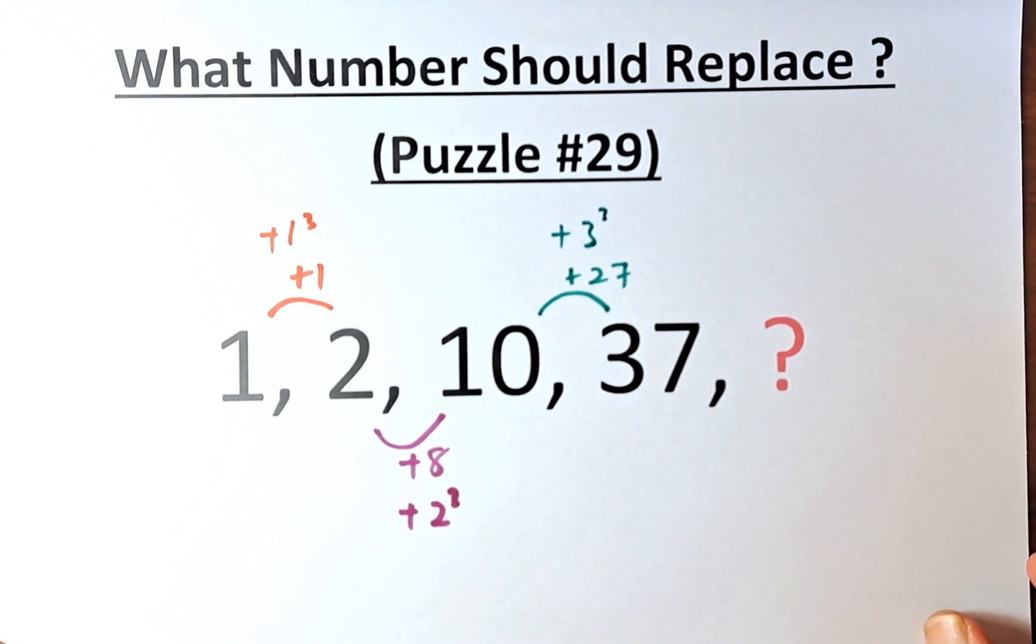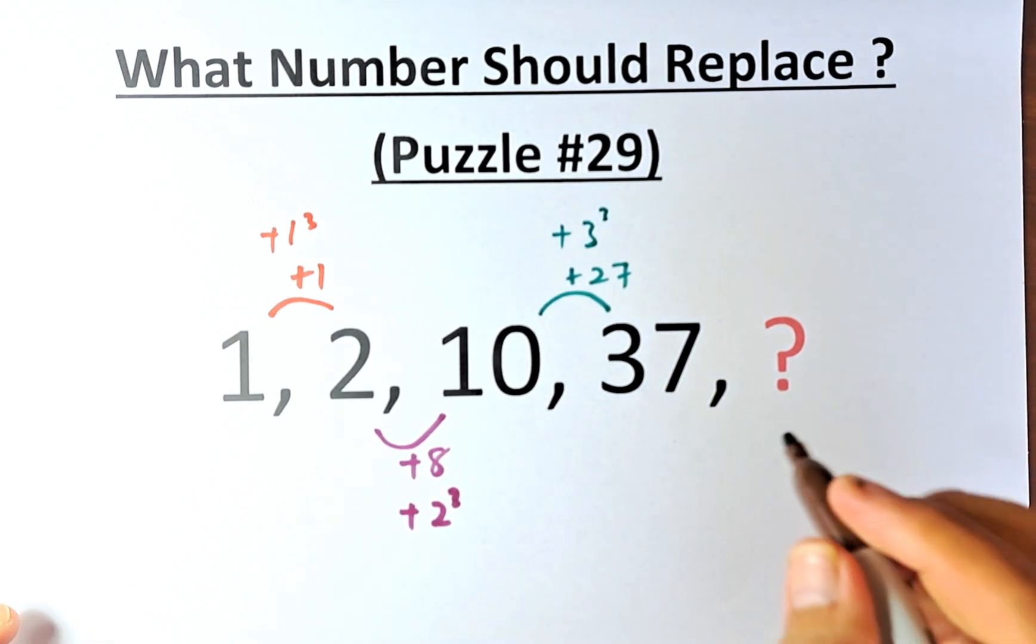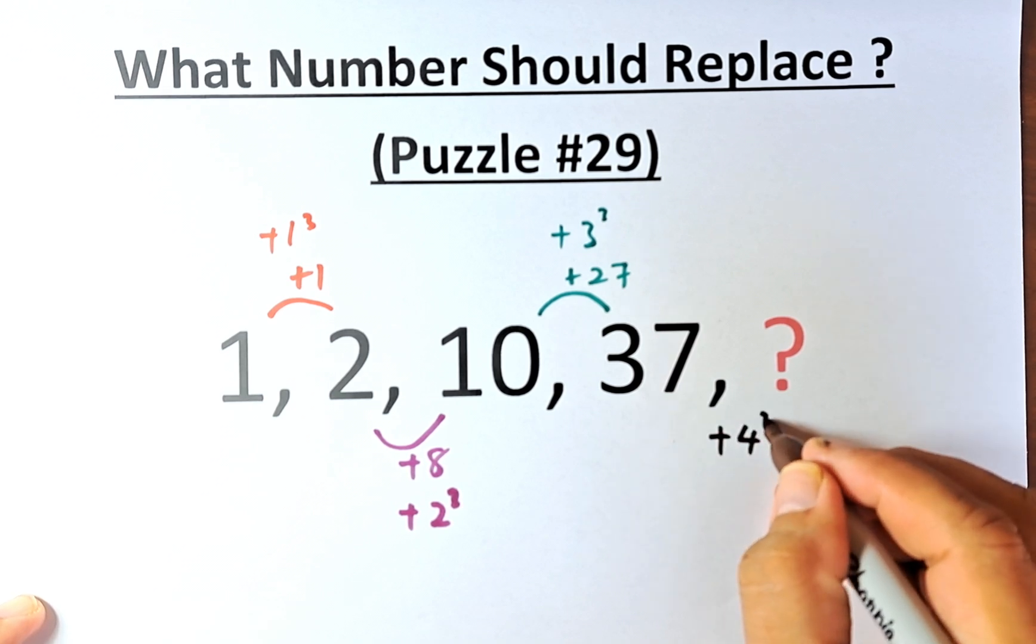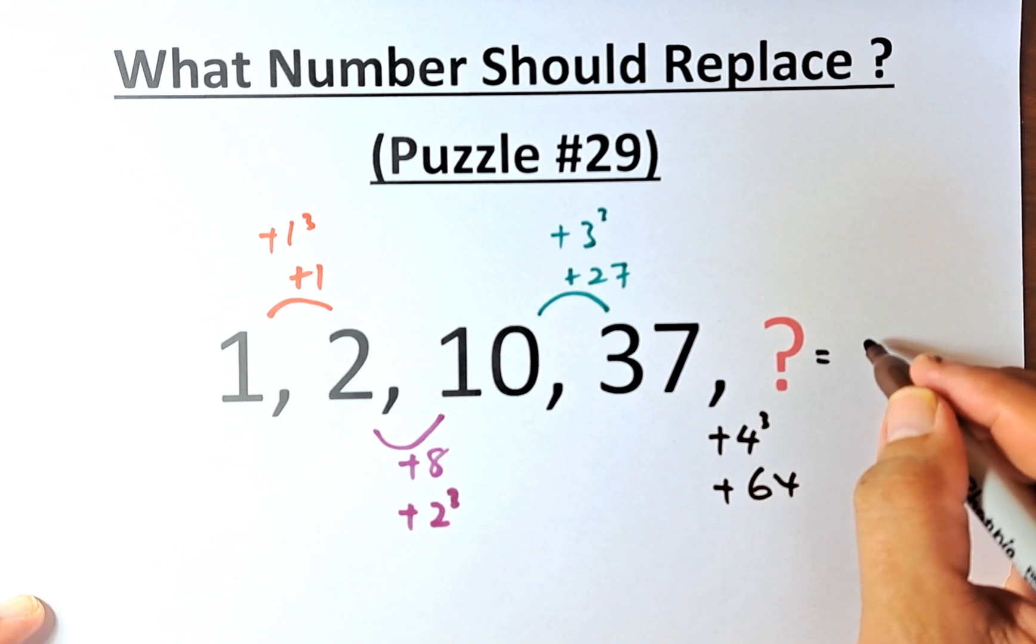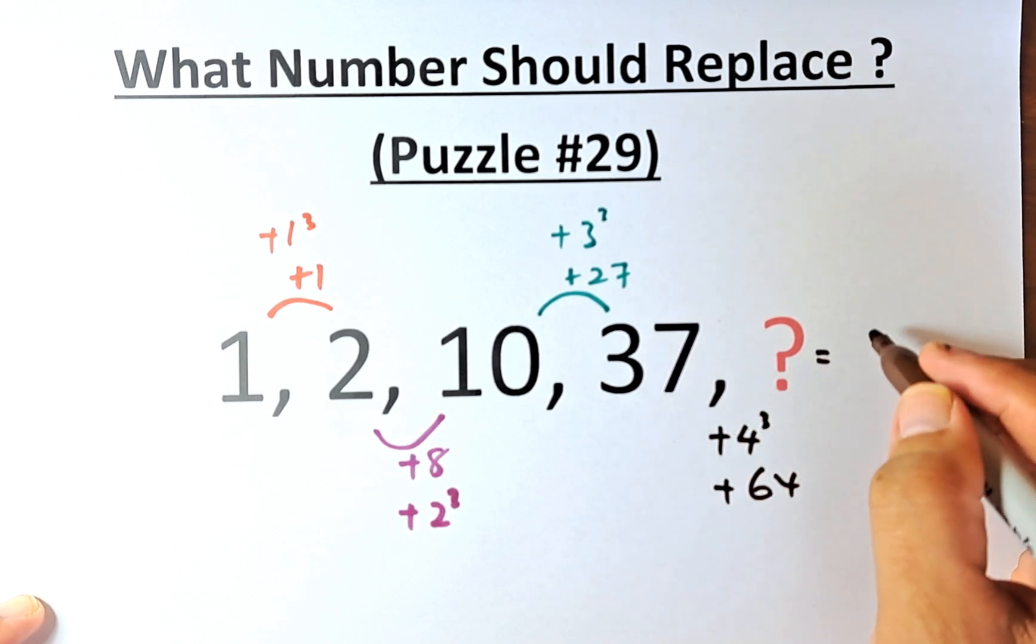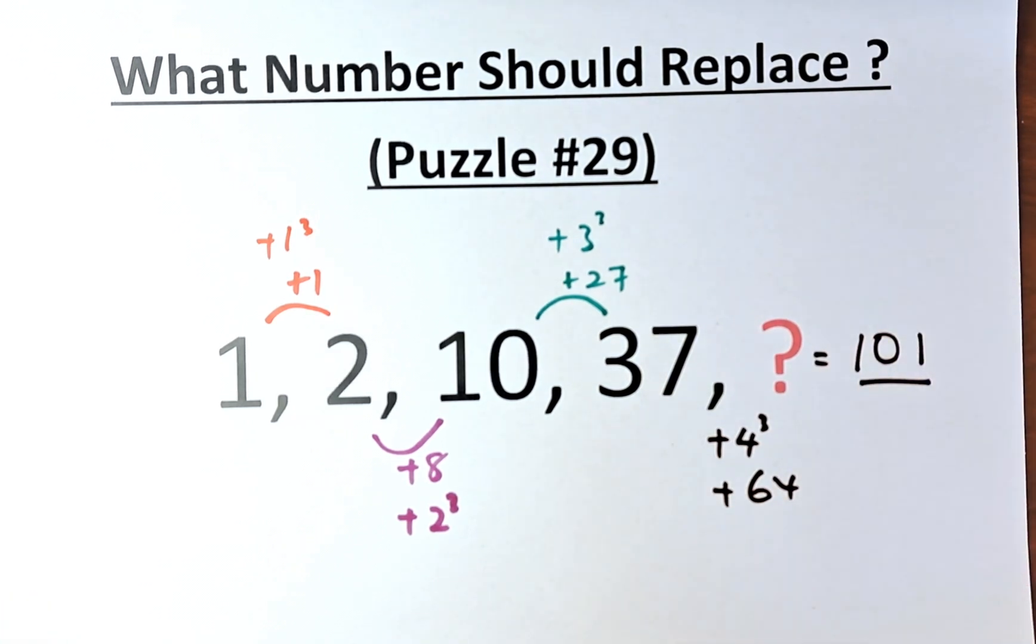So what will be the question mark? The question mark is going to be 4 cubed. We're going to add 4 cubed or plus 64. And the question mark is going to be 37 plus 64, and the answer is a beautiful number of 101.